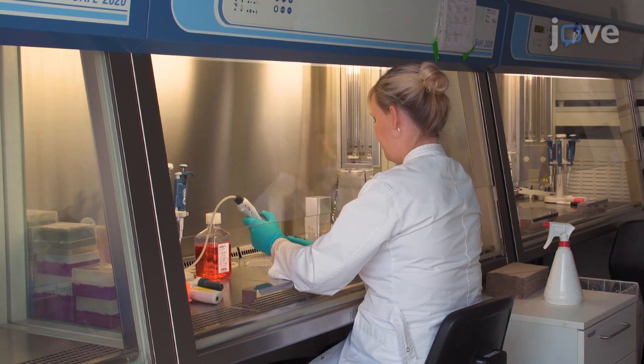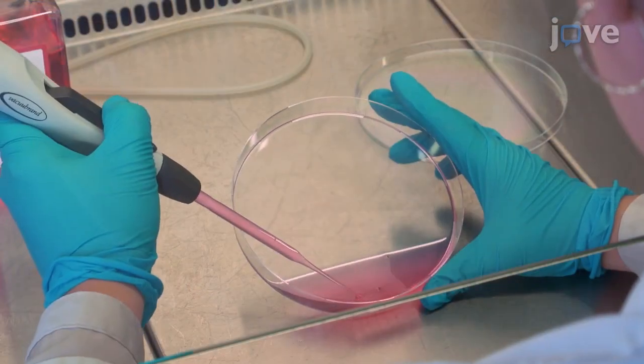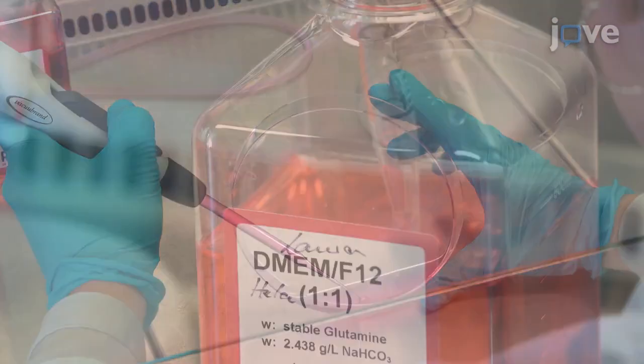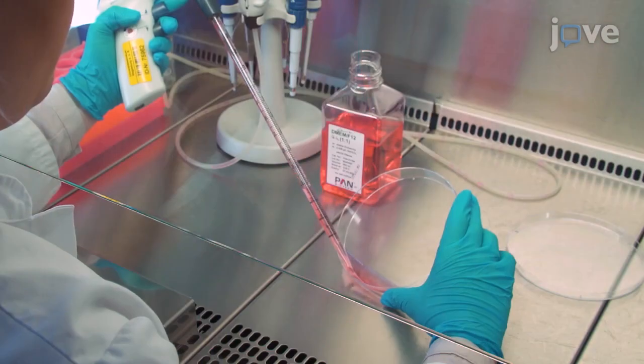Begin the experiment with cells that are 80% to 90% confluent and adherent to the dish. Discard the medium and add fresh medium to the adherent cells.